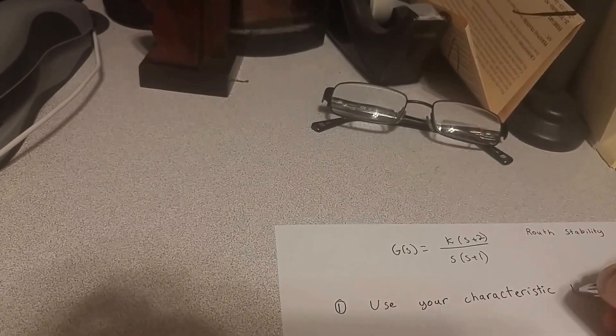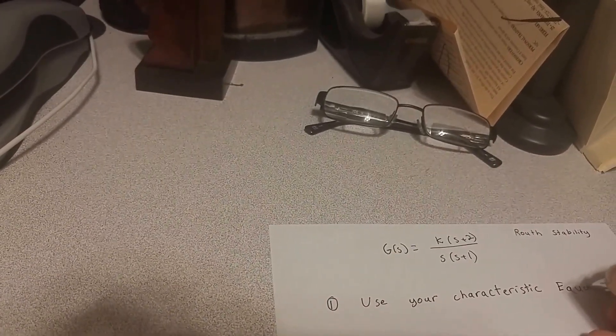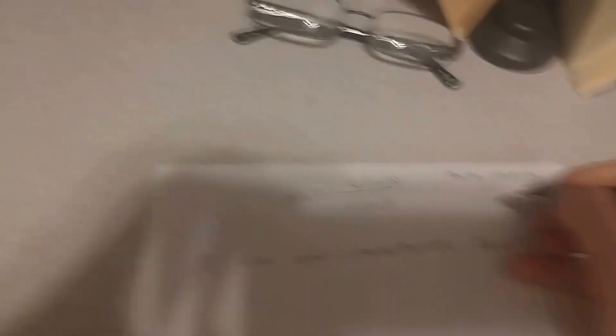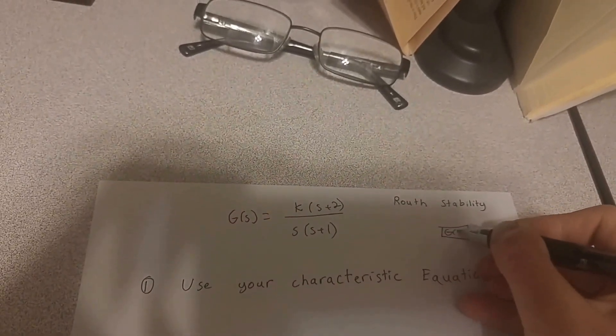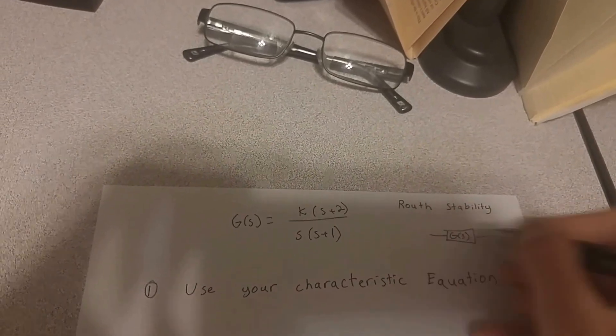You're probably all familiar with this by now. So basically, if this is g of s right here, and you have a control system like this, g of s, and then this is just like that.